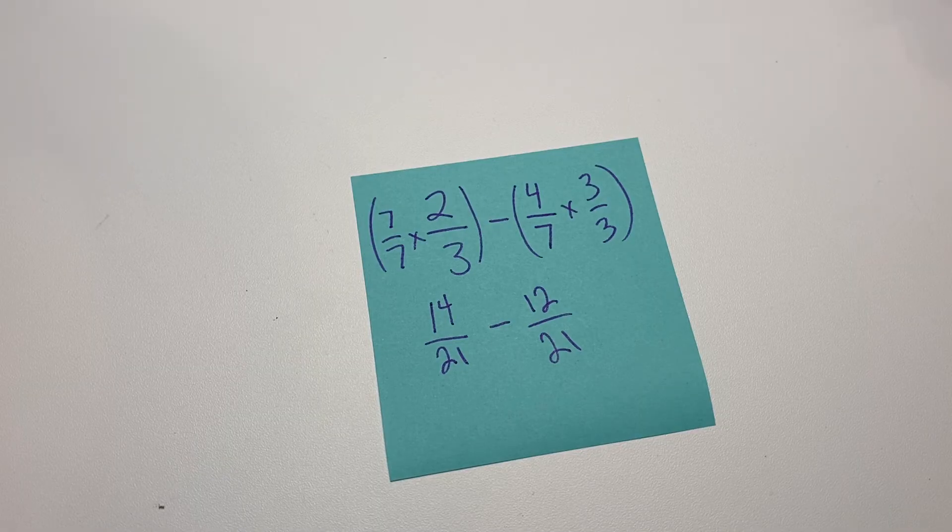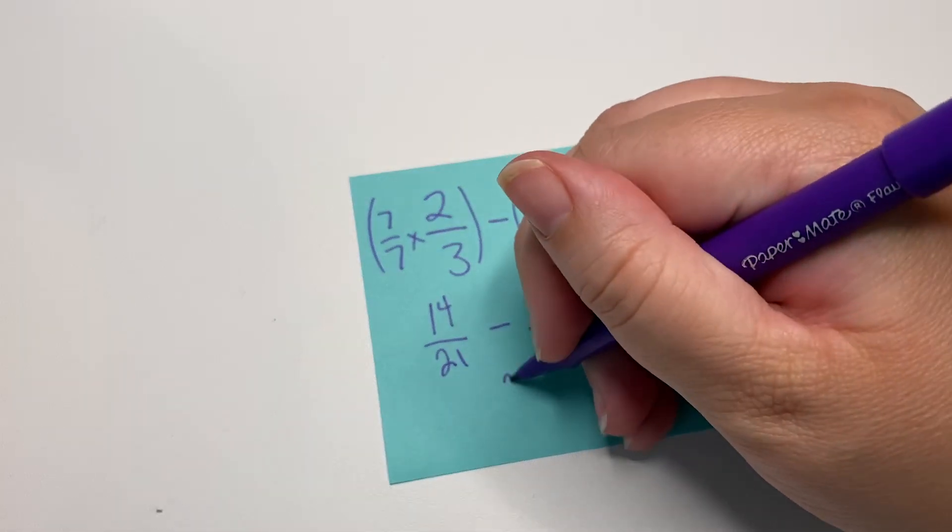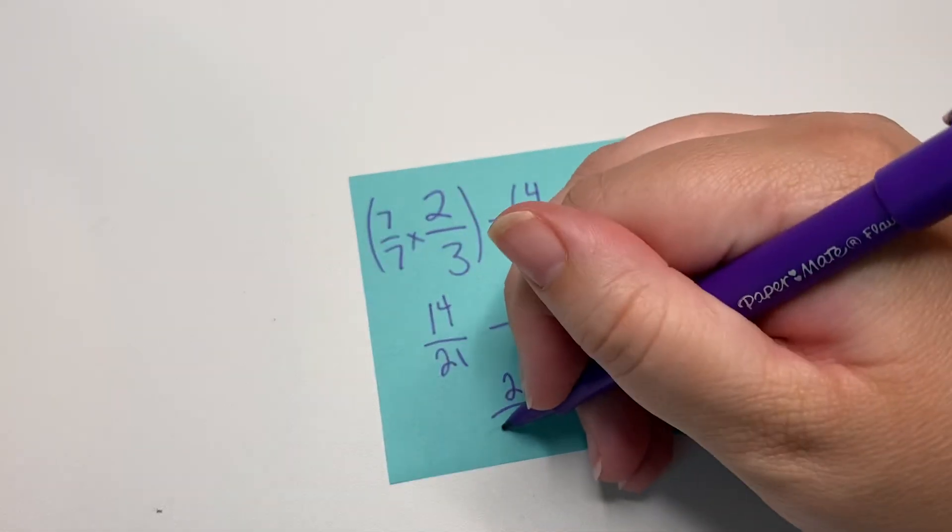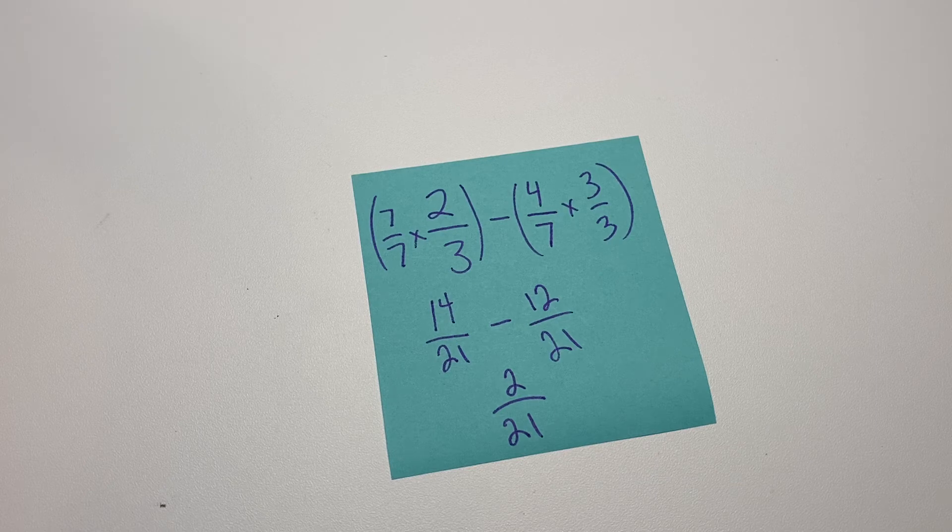And now we can just subtract. So 14 minus 12 is two. And we keep our denominator. And then we're all done.